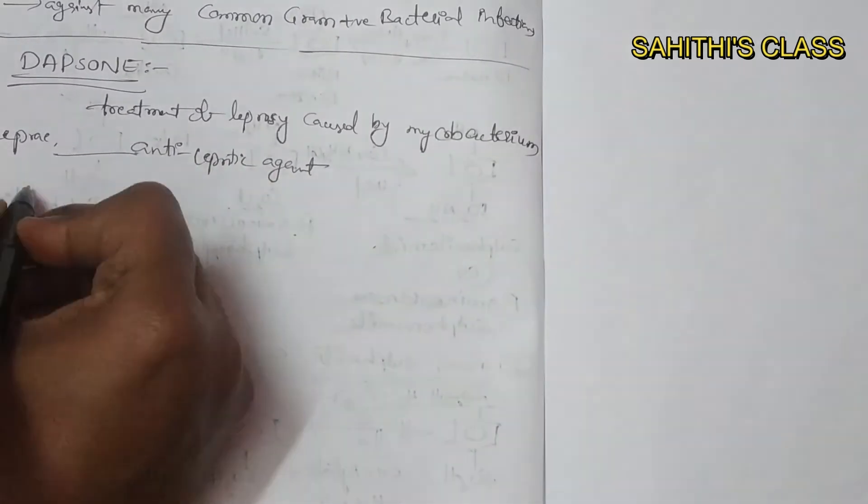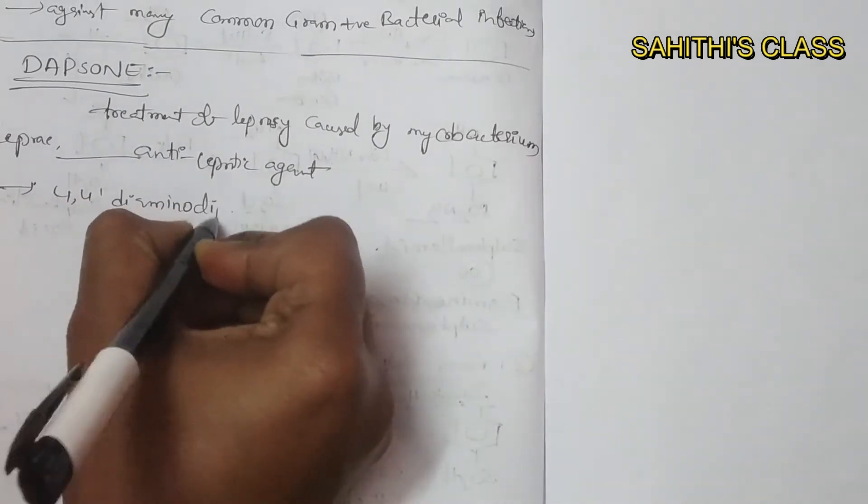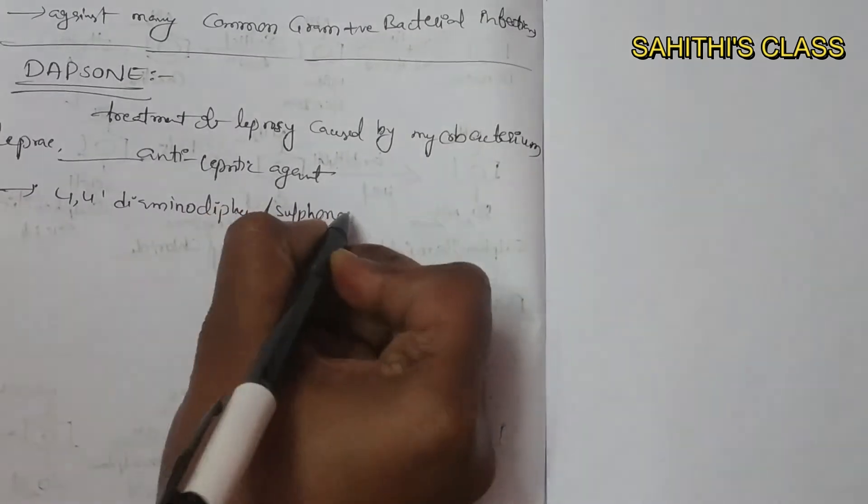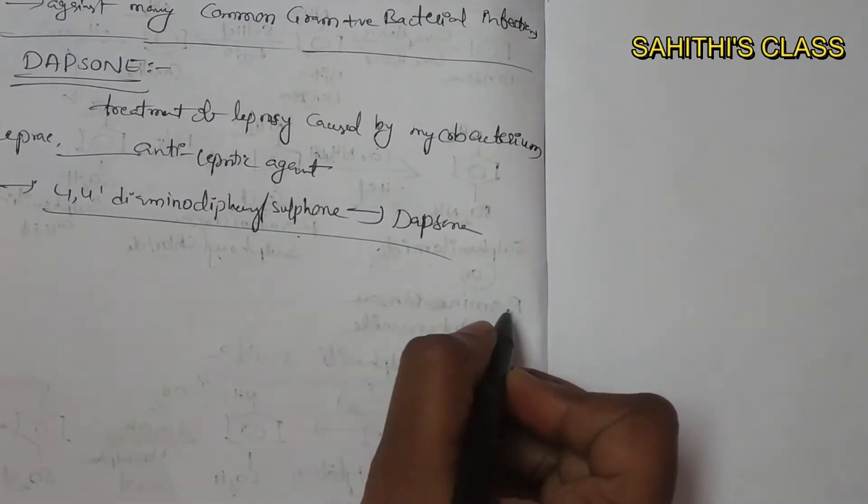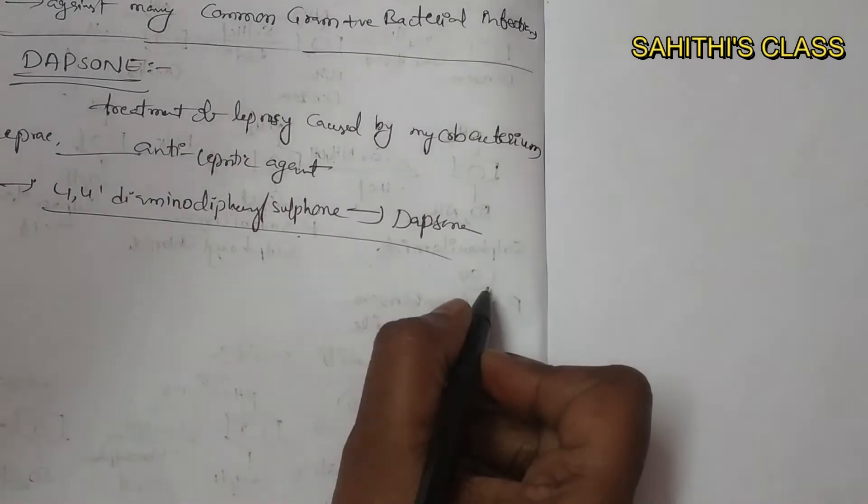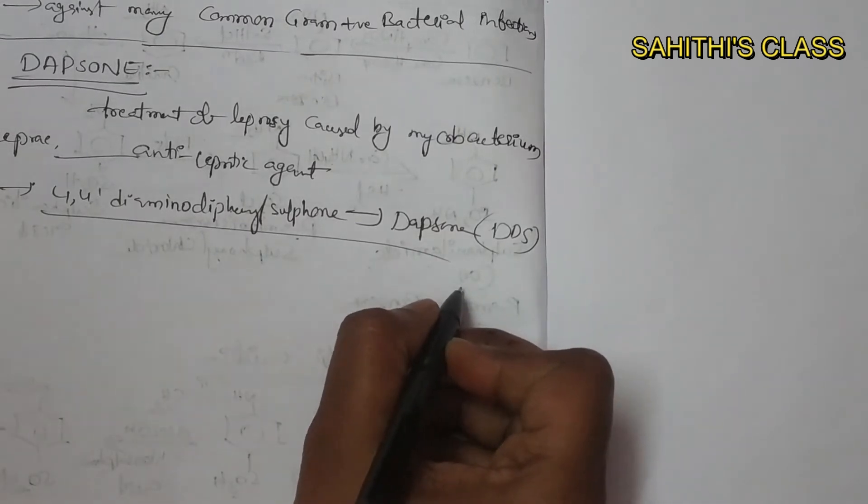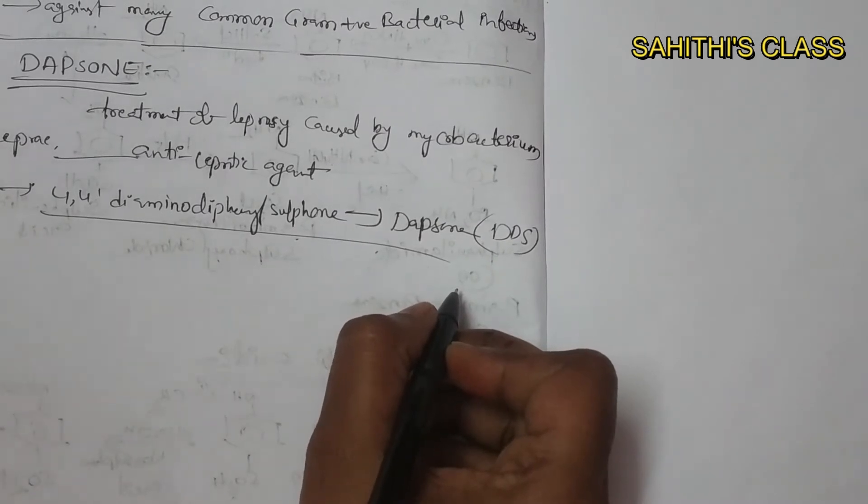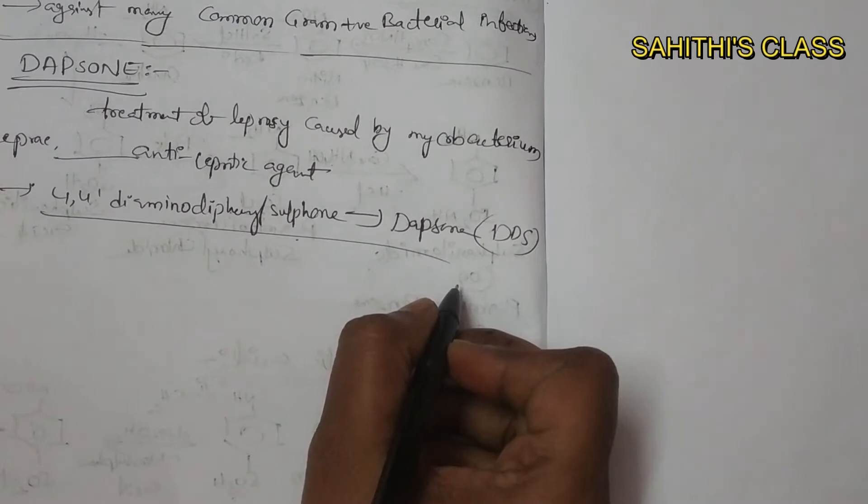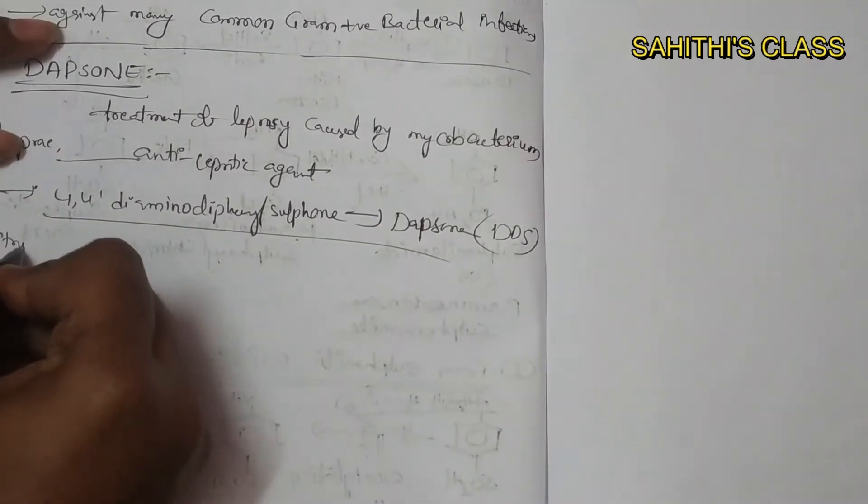Dapsone means 4,4-diamino diphenyl sulfone. It is also known as DDS. It is the simplest, oldest, cheapest, and most common member of its class.